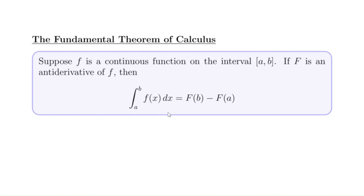Now let's remember what this notation means: the integral from a to b of f(x) dx. This means the area underneath the curve of f and above the interval a to b — that would be if f is a positive function. If f is sometimes positive and sometimes negative, we're talking about the net signed area between the graph of f and the interval a to b.